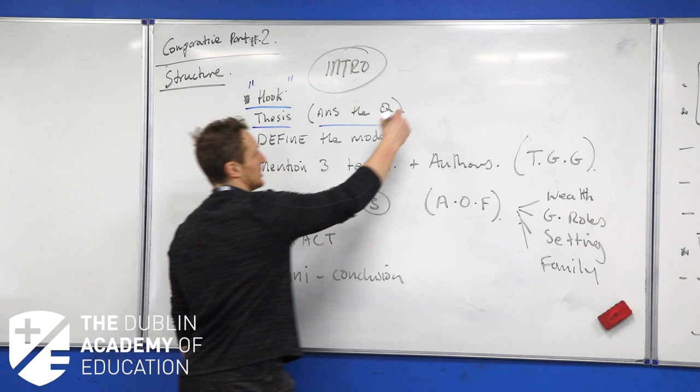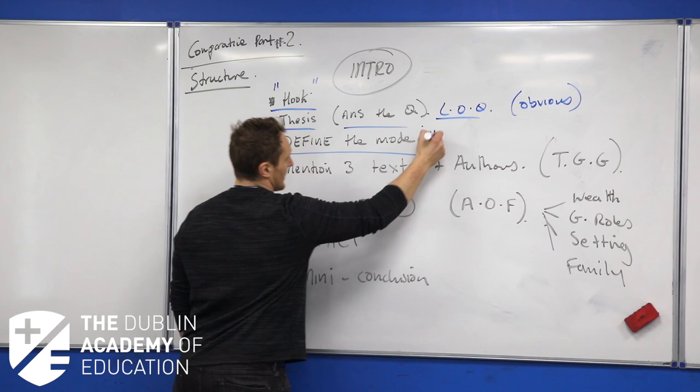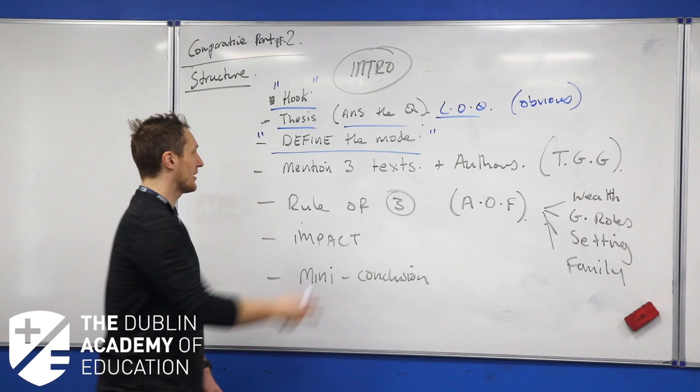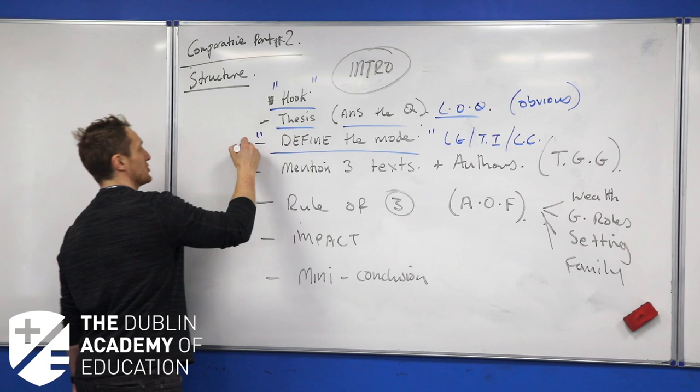We're going to use the LOQ for that, make it very obvious to the examiner what specific parts of the question we're answering and when. Make sure you define the mode. I have those definitions at the very beginning of each individual breakdown - at the start of literary genre, theme and issue, and cultural context.